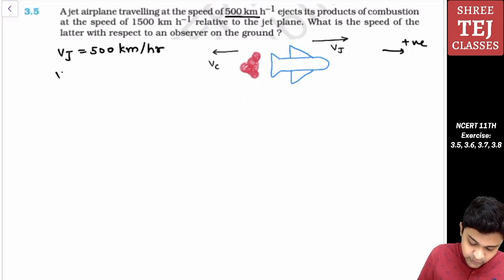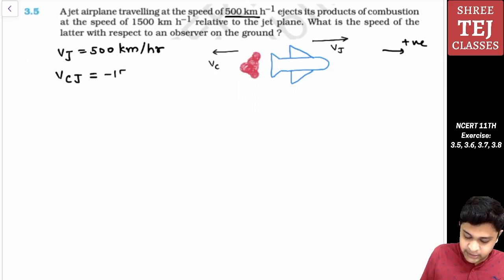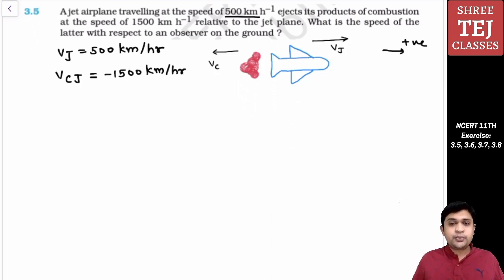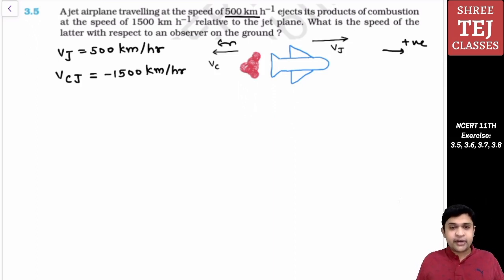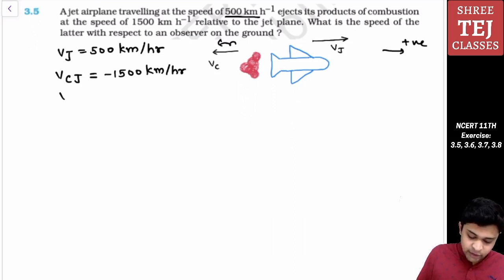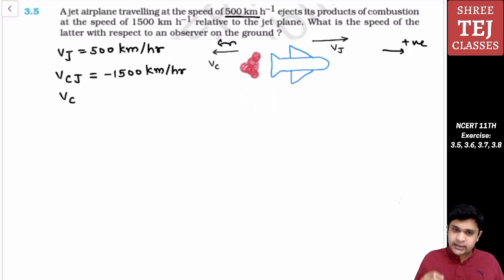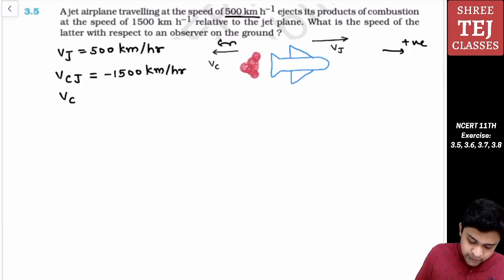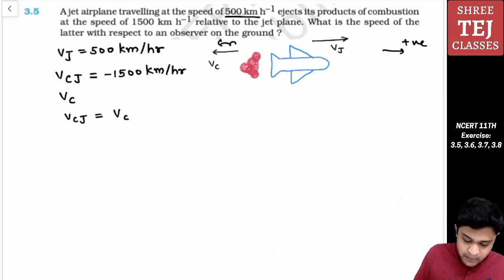So V of C with respect to jet will be minus 1500 km per hour. Why minus? Because the combustion products will be thrown behind, in the negative direction. We have to find the velocity of combustion products as seen by a person on the ground — we have to find V of C. We know V of C relative to jet equals velocity of combustion products from ground minus velocity of jet.